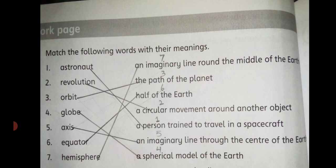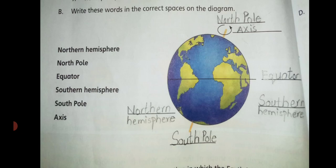This way you can match it. Okay students, now come to Part B: Write these words in the correct spaces on the diagram. A diagram has been given here. A word bank has also been given; using it you have to solve this diagram. We start from the top — from North Pole. You can see the number 1 blank at the top; there we will write North Pole. N-O-R-T-H P-O-L-E. Do not make a spelling mistake.